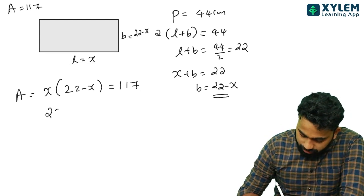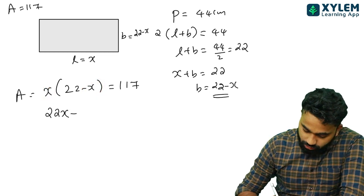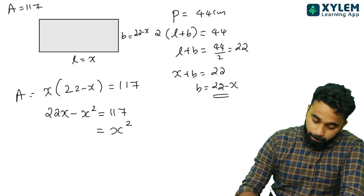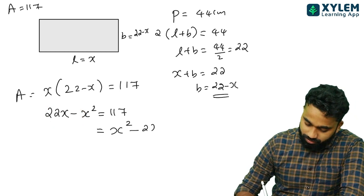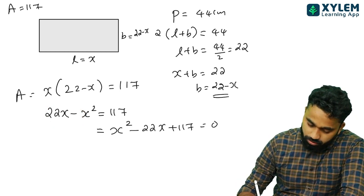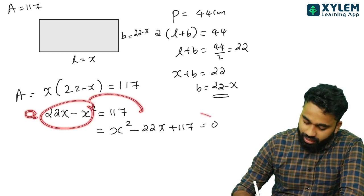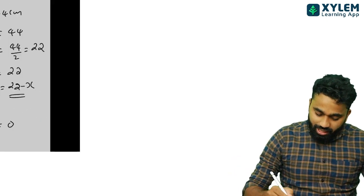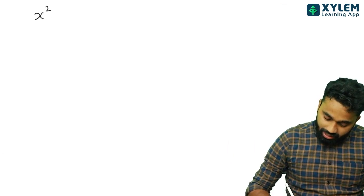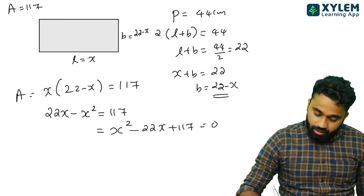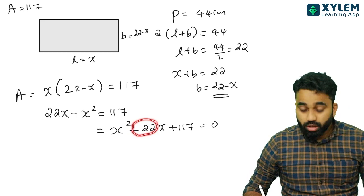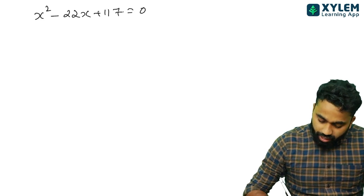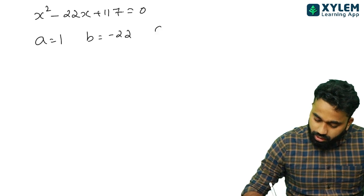We have x squared equal to 318. Working through: x squared plus x squared minus x squared and equal to 0. So the quadratic is: A equals 1, B equals minus 22, C equals 310.